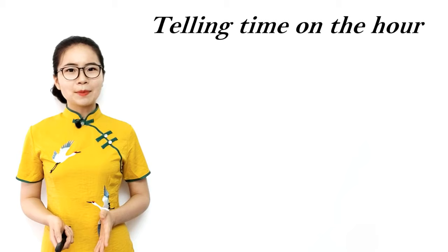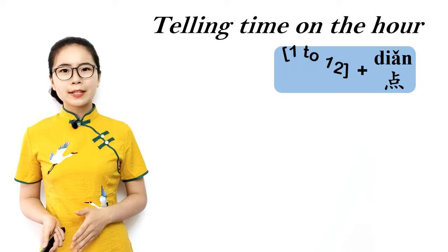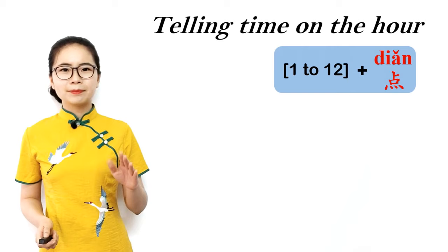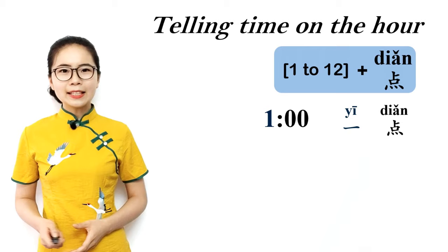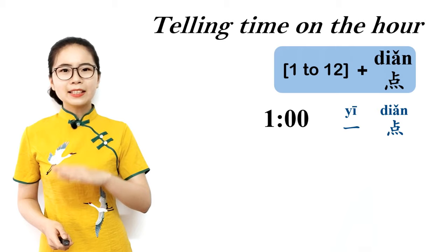To tell time on the hour, we simply put the numbers from 1 to 12 before 点. Please repeat after me: 点, 点, 点. For example, 1 o'clock is 一点 — it's the number 1, 一 plus 点, 一点. 1 o'clock.